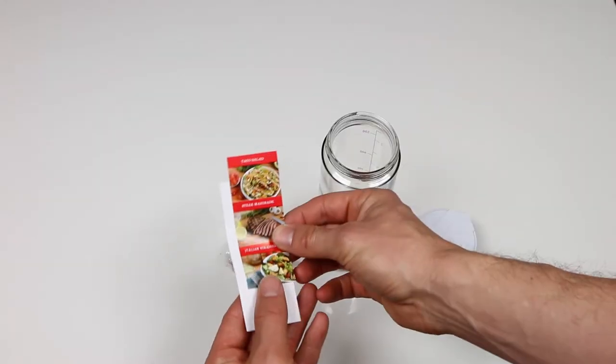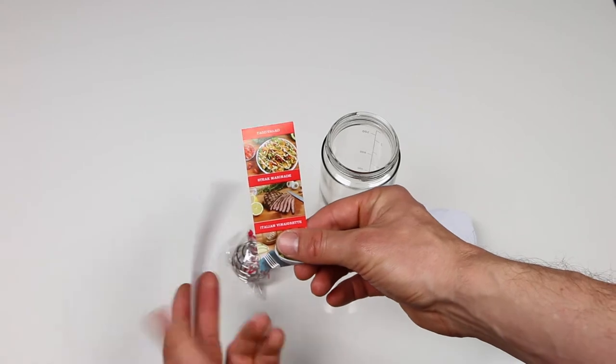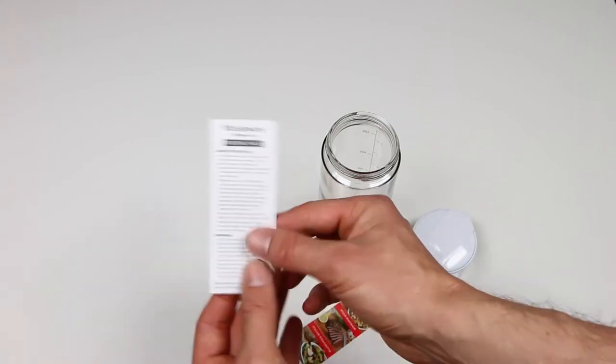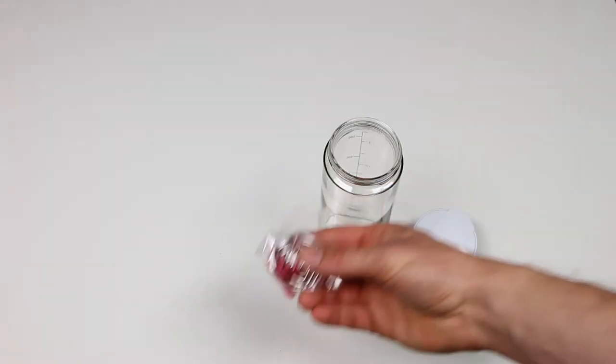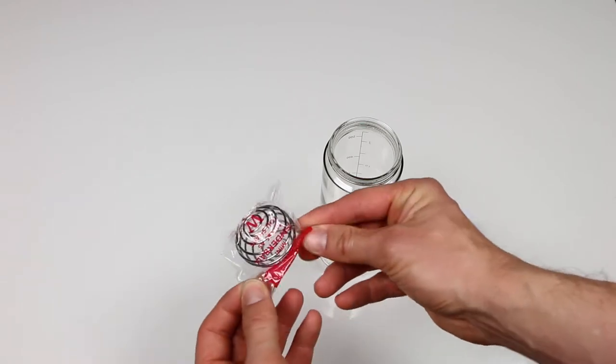Inside the 2.5 cup glass shaker, there's a little set of instructions on how to use the shaker and how to take care of it, and of course the little blender ball inside as well.